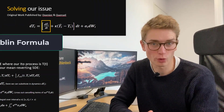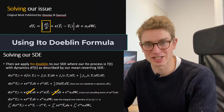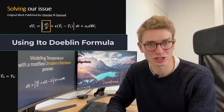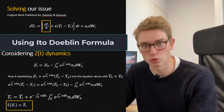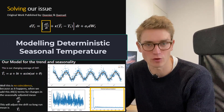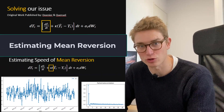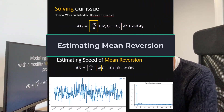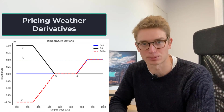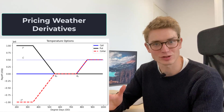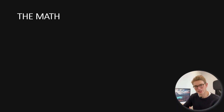In this video, we're going to go through all the Itô calculus around the stochastic dynamics of creating a modified Ornstein-Uhlenbeck process for modeling temperature data. This is for the final use of actually using this model to price temperature and exotic options. If you're interested in weather derivatives and Itô calculus in general, let's dive into it.